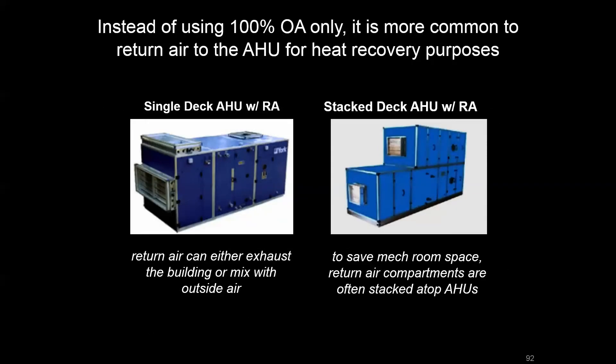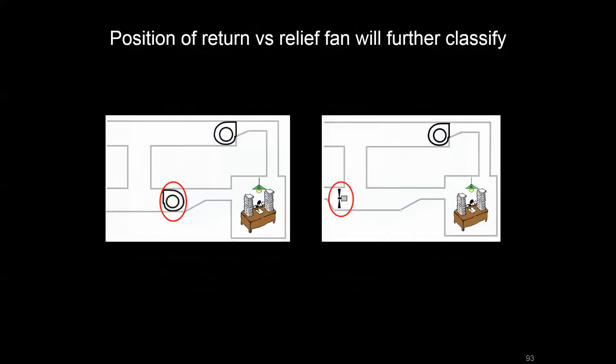The way that return air comes back to the unit may geometrically differ between air handling unit types, but what's more critical is what type of fan configuration you have inside the air handling unit. One of these is a return fan and one would be called a relief fan — can you tell which one?